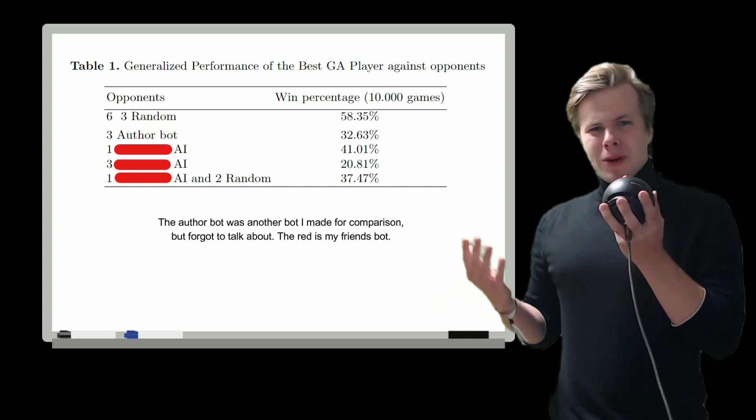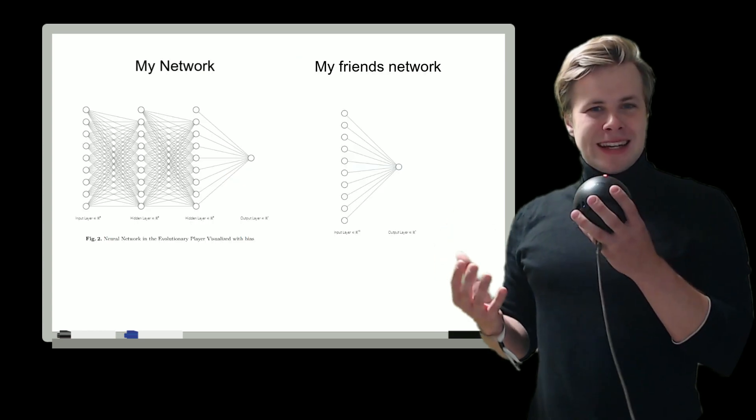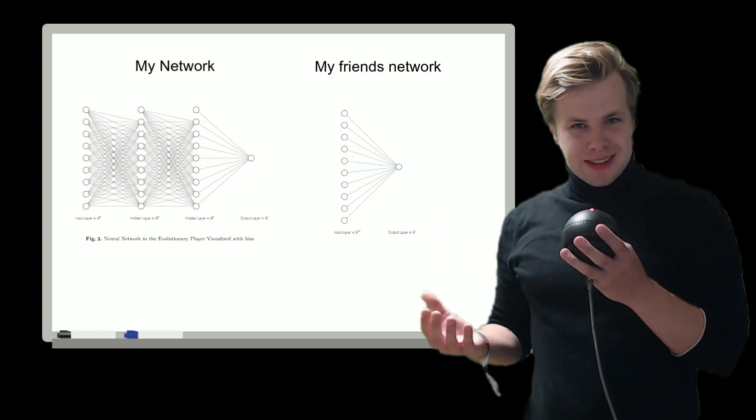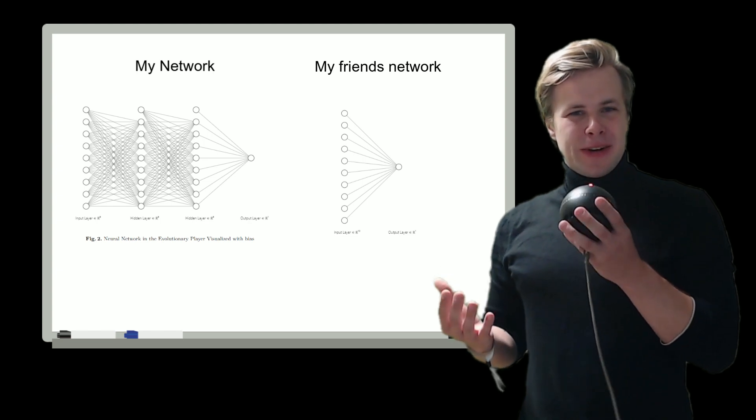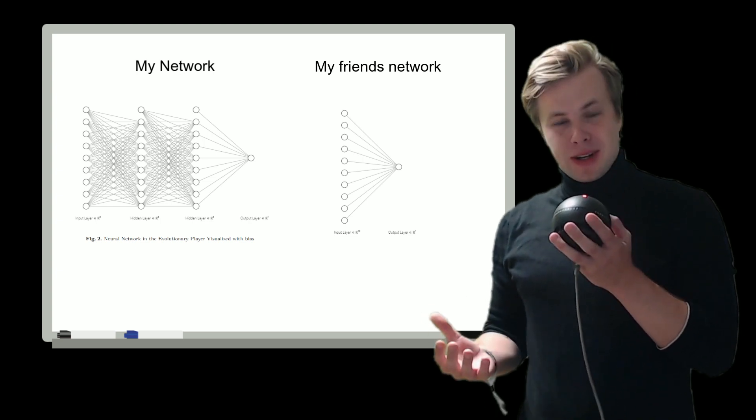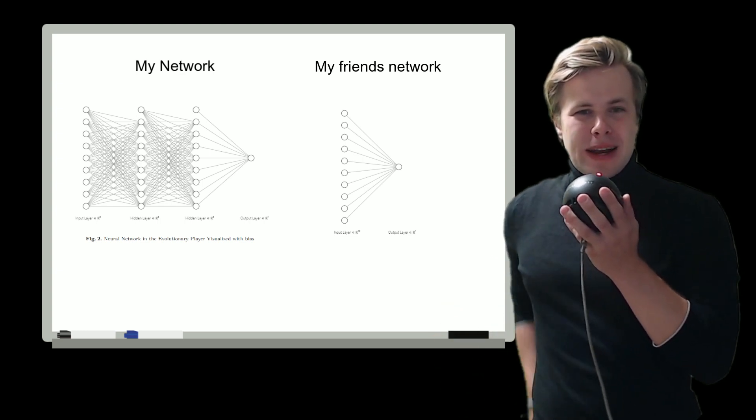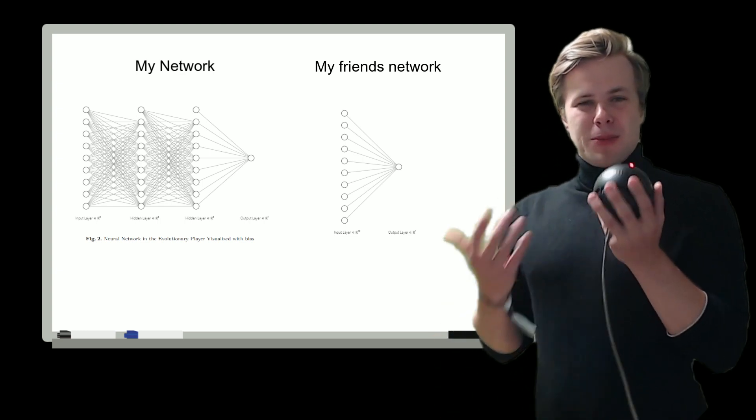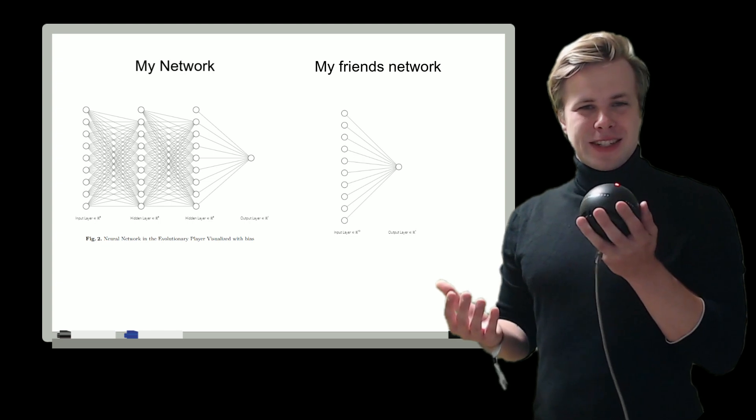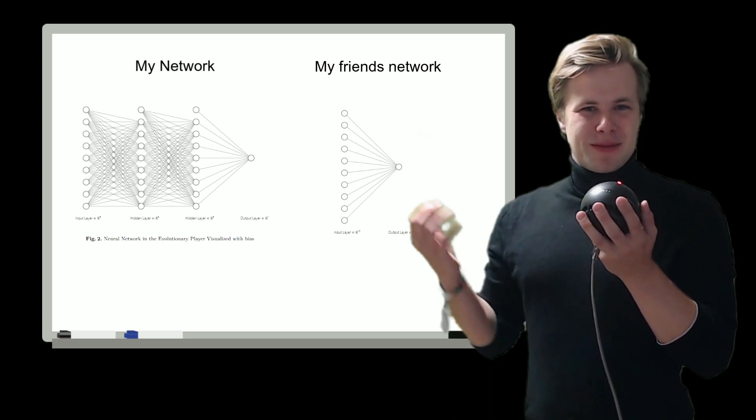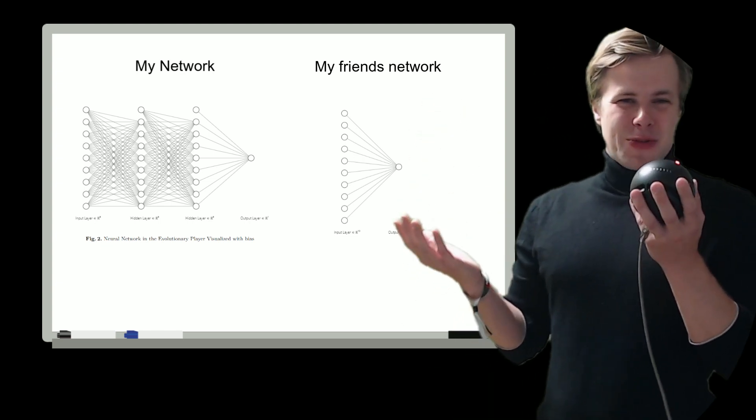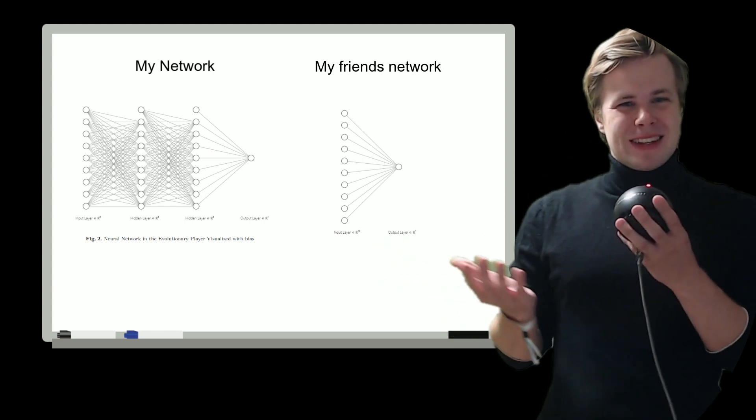So what was the reason for that? I don't know exactly of course, but I suspect a few things. One of the things is that her neural network is significantly simpler—she does actually not even have a hidden layer, it goes directly from input to output, which means that it needed significantly less generations to get better because there were fewer values in the chromosome that needed to be adjusted.